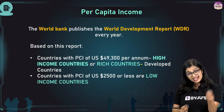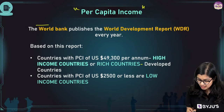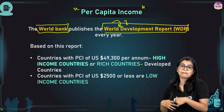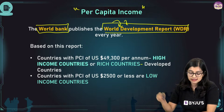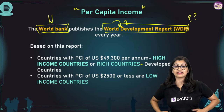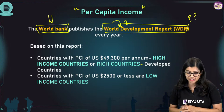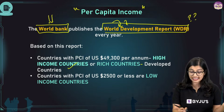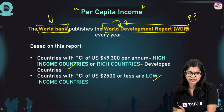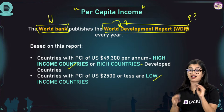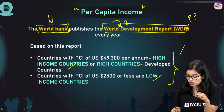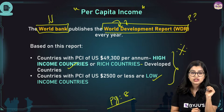Based on per capita income, the World Bank publishes the World Development Report. The World Bank tallies what's happening in different countries and classifies them as high income countries, low income countries, or lower/upper middle income countries. Based on this report, you decide whether a country is well-developed, developing, or not developed. This data is given in your textbook — please put a star mark on page number 8.